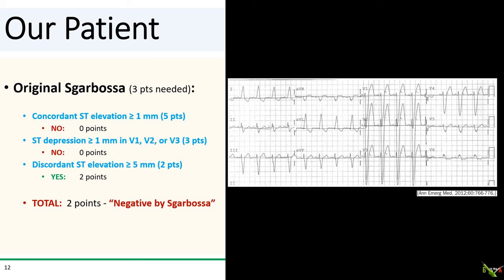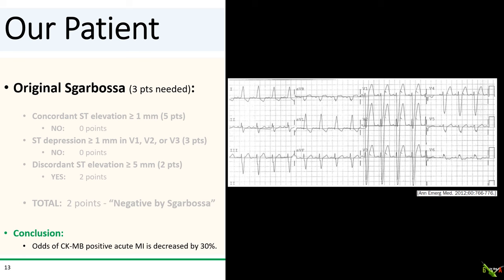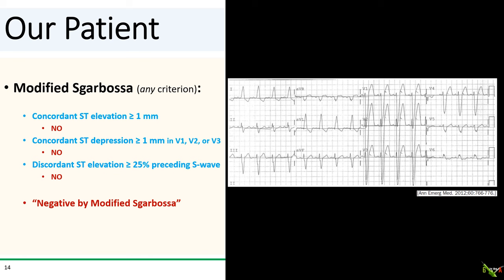What about our patient? If we look at her ECG using the original Sgarbossa criteria, she only gets two points for discordant ST elevation of five millimeters or more. So despite what the ED told you, she is actually negative by the original Sgarbossa criteria. This only decreases her odds of a CKMB-positive acute MI by 30% — not really that helpful for deciding whether to call in your team on Christmas Day.